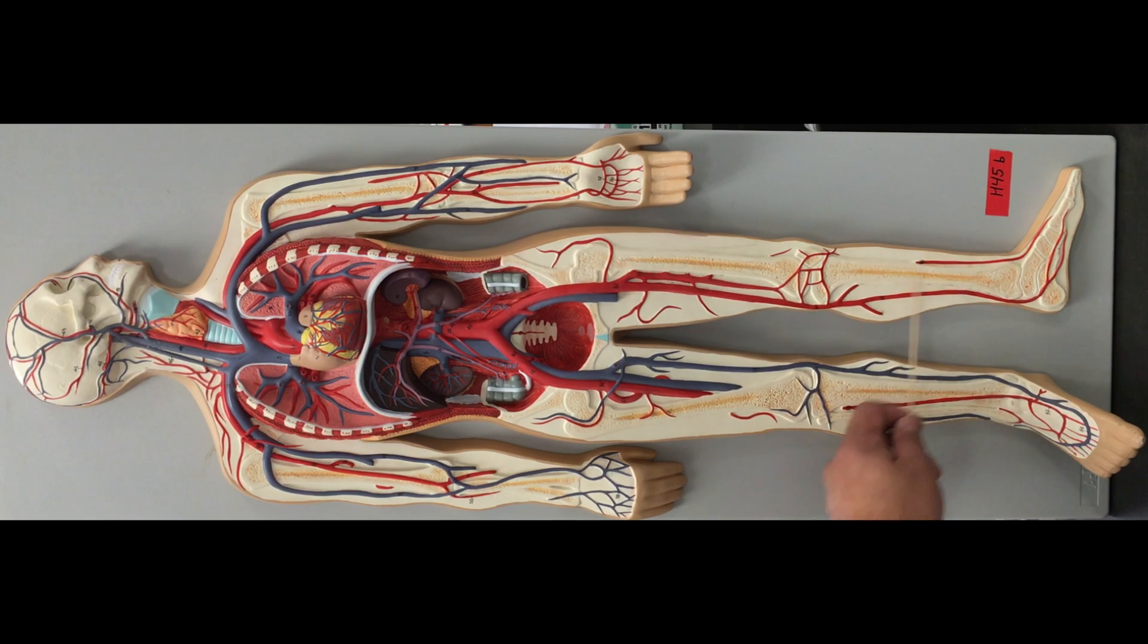This is going to be our anterior tibial artery and our posterior tibial artery. As we continue over the foot, the dorsal aspect, this becomes our dorsal artery.